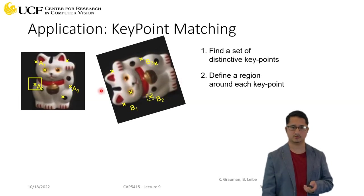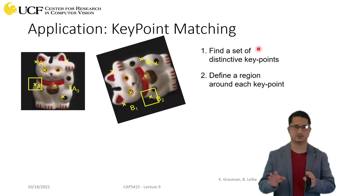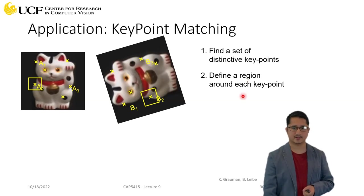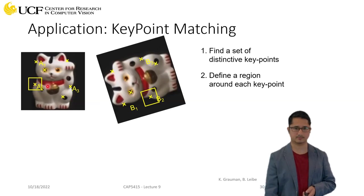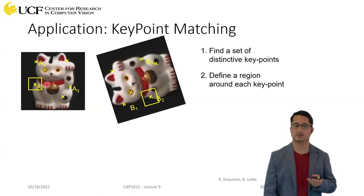Here I'm showing key points present in the left image and corresponding key points on the right. If your algorithm can detect key points in one image and repeat the same on a different image of the same object — identifying the same set of key points — you can use those key points for image matching. If the key points match, you say it's the same object even though the image is rotated. The first step is detecting these key points; the second is defining some kind of region or window around each key point.